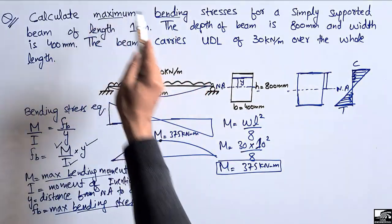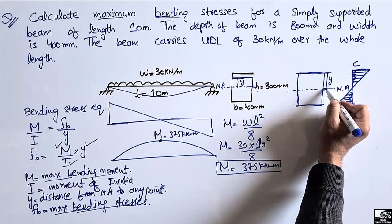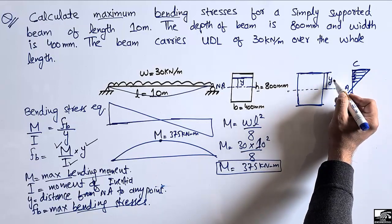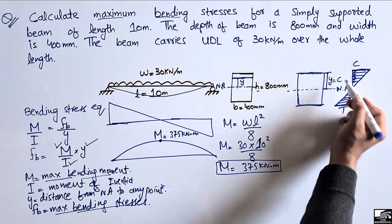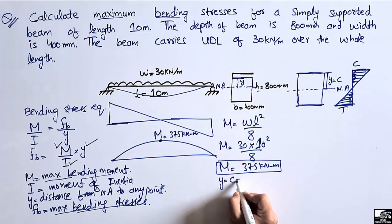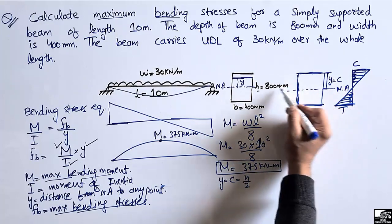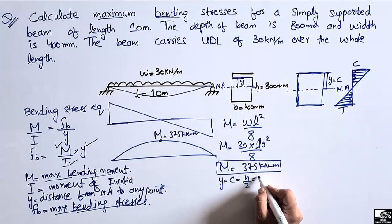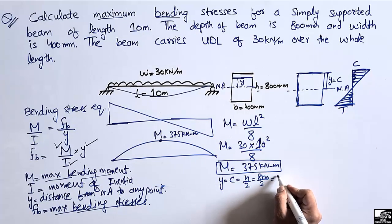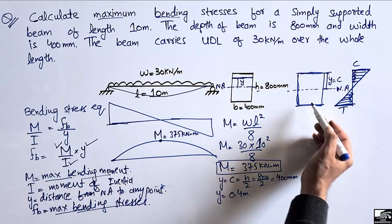Our y is the distance from the neutral axis to the top (extreme) portion of the beam, which is the maximum distance. When y equals the distance from the neutral axis to the top, we call it c. So y = c = half the total depth = 800/2 = 400 millimeters, or 0.4 meters.